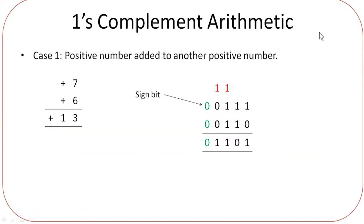You will have different cases here. The first case is a positive number added to another positive number. Suppose you have two numbers: plus 7 and plus 6. Both are positive numbers; when you add them you will get 13, which is also a positive number. Now in one's complement notation, you are going to convert all these as binary numbers.